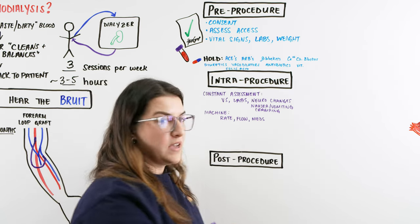Nausea and vomiting can occur because of rapid fluid and rate changes. Give anti-emetics, but also note whether the anti-emetics are working. If nausea and vomiting persist, consider whether there is an underlying issue — such as disequilibrium syndrome. Nausea and vomiting could indicate something neurological is going on.